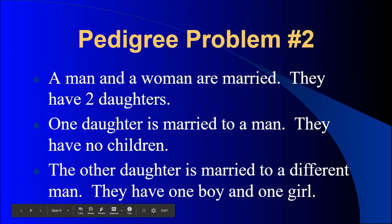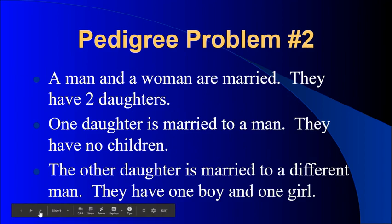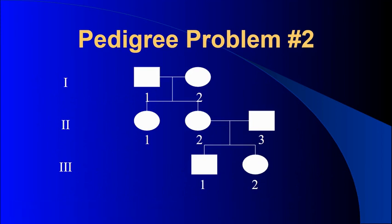Here's another example problem. A man and a woman are married and have two daughters. One daughter is married to a man but they have no children. The other daughter is married to a different man and they have one boy and one girl. In the pedigree, the daughter with no children is shown as person 2-1, the first person in generation two. Note that if someone does not have children, we do not show who their spouse is. The other daughter and her husband have a boy and a girl shown in the third generation.